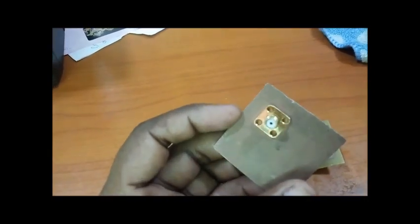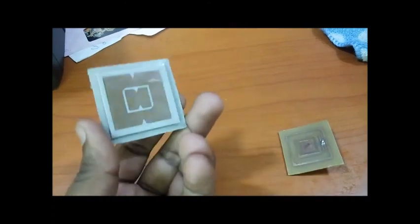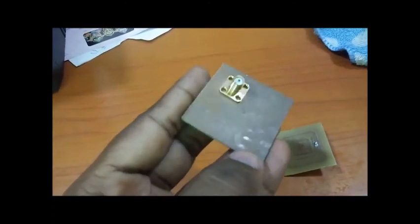This is the SMA connector which is the feeding point by coaxial cable. You see this is the ground frame which is fully metal, and this is the antenna patch.